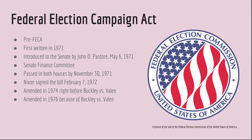The Federal Election Campaign Act was amended in 1974, which was right before the Buckley v. Vallejo case, and again right after the case in 1976. Since then, there have been several minor amendments to the act.